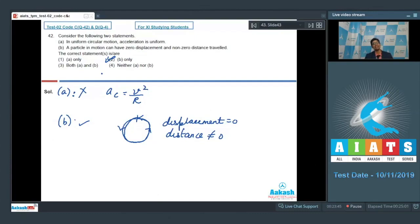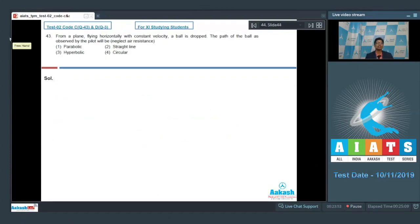Let us proceed to the 43rd question. Question number 43 says from a plane flying horizontally with constant velocity, a ball is dropped. The path of the ball observed by the pilot will be, neglect air resistance. Let us try to visualize this problem. As per the problem, there is a plane from which a bomb is dropped and the plane has a certain constant velocity v. As the bomb is dropped from the plane, it starts its motion with the velocity equal to the velocity of the plane itself. That is, the initial velocity of the bomb will be v.